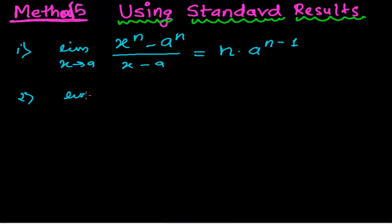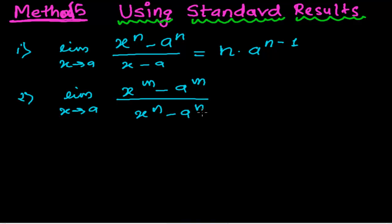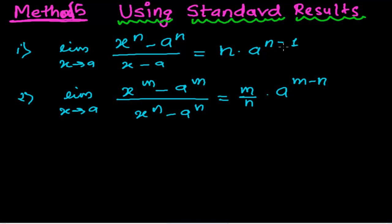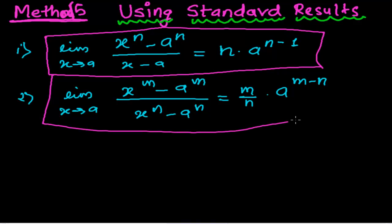Another result is: limit when x tends to a of (xᵐ - aᵐ) divided by (xⁿ - aⁿ). For this kind of expression, if you solve by any method — generally by the substitution method as we learned in the fourth method — we always find the standard result is m upon n times a to the power m minus n. This is another standard result obtained after solving lots of problems. So these are two standard results or standard forms, and using these we will be solving lots of problems. It's a quick method.